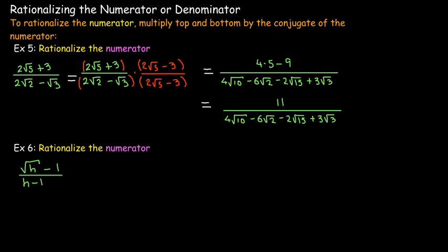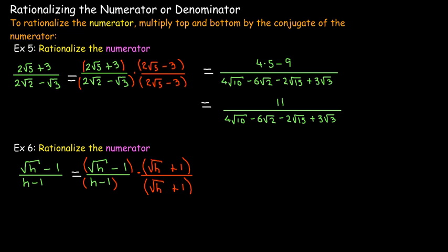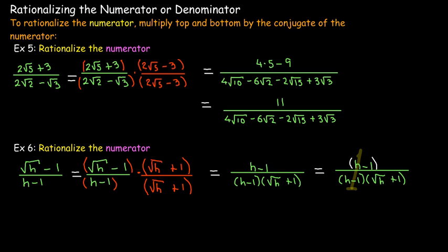Here's a type of rationalization you need for a number of different applications in calculus. We're going to rationalize the numerator by multiplying top and bottom by the conjugate of the numerator. I'll get a new algebraic expression where the radical is now in the denominator. I also notice a factor of h minus 1 in both numerator and denominator, which cancels. After simplifying, in the numerator I just have 1, and in the denominator I have radical h plus 1.